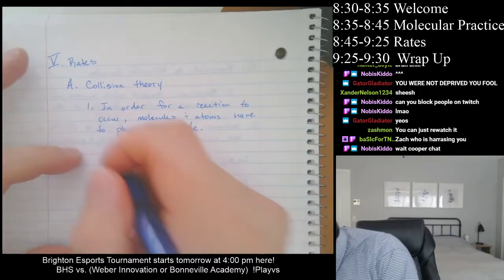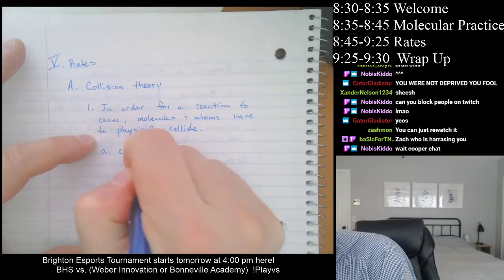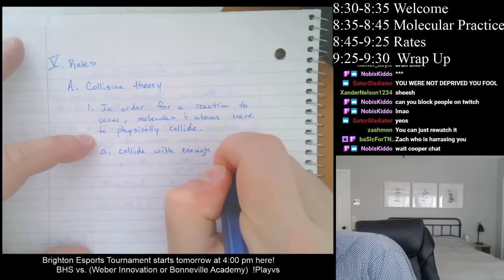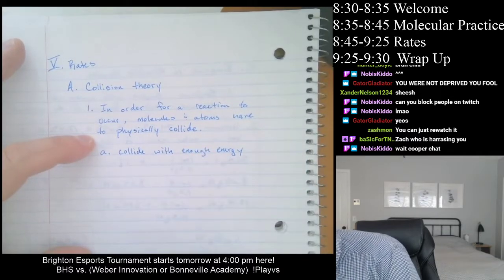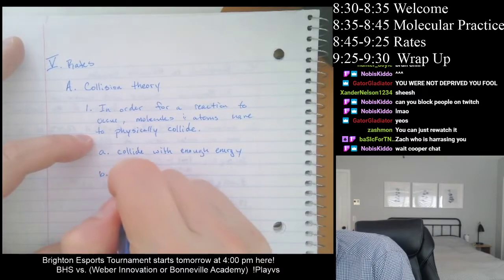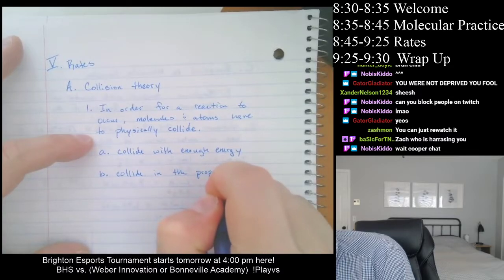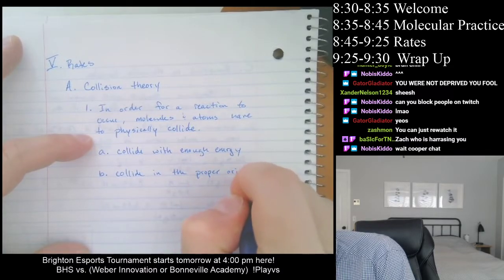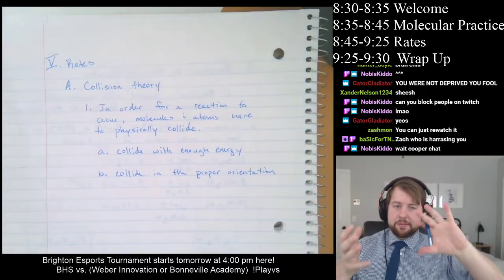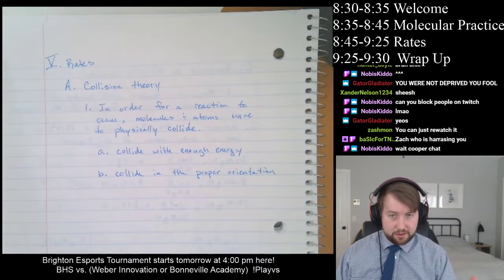They have to collide with enough energy, and they have to collide in the proper orientation. When you get large complicated molecules, those molecules have to be oriented in the correct way so that a collision can form a successful compound.